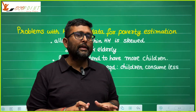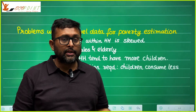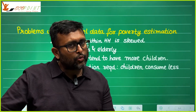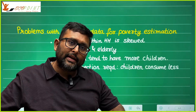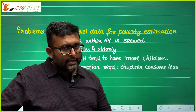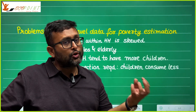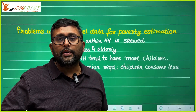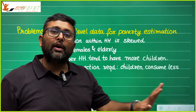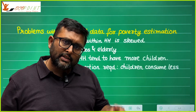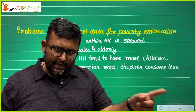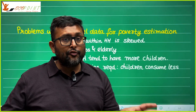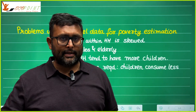There is also a problem when using household-level data for poverty estimation instead of individual data. One problem is: given household-level expenditure, do you think that expenditure is going to be uniformly distributed among all members? That is not generally seen. Females and elderly typically get a very small proportion of total household expenditure. Second, larger households tend to have more children, and children do not consume the same amount as adults, so a correction is required there as well.